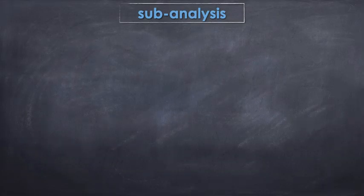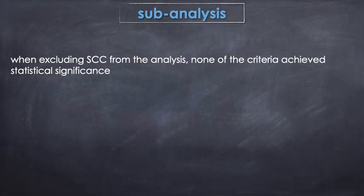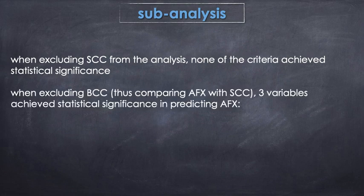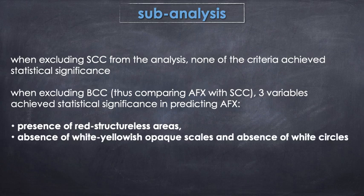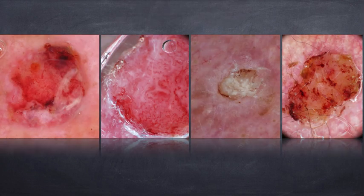In a sub-analysis, we compared AFX first with BCC, excluding SCC, but none of the criteria found achieved statistical significance. On the contrary, when excluding BCC and comparing AFX with SCC, three variables achieved statistical significance in predicting AFX: the presence of red structureless areas, the absence of white-yellow scales, and the absence of white circles.